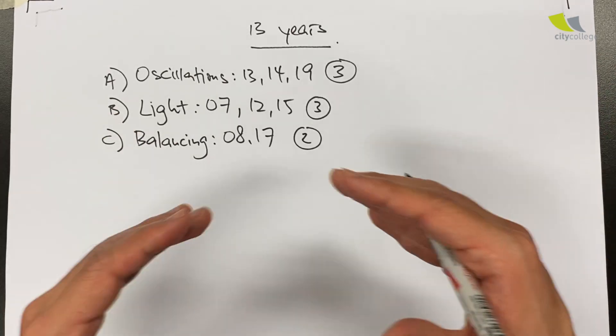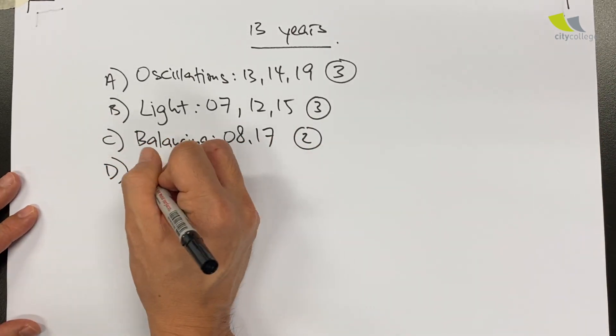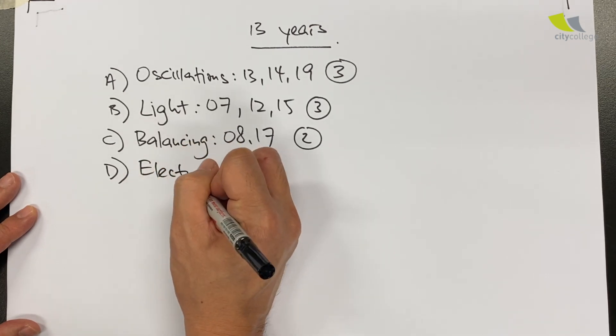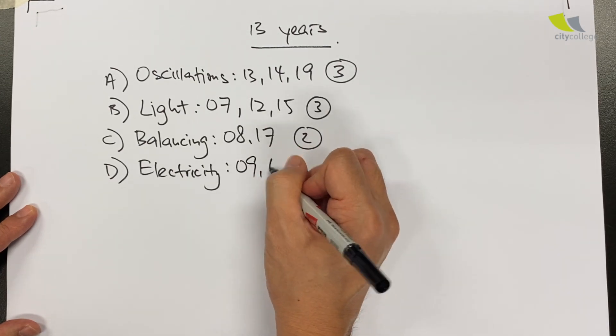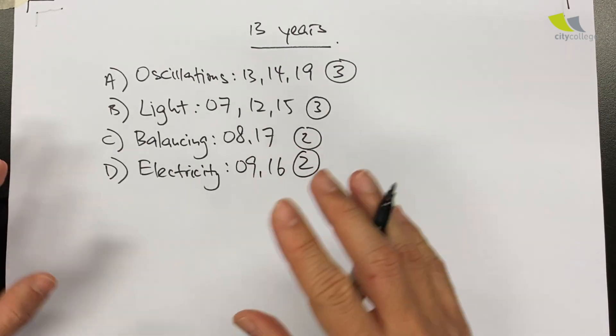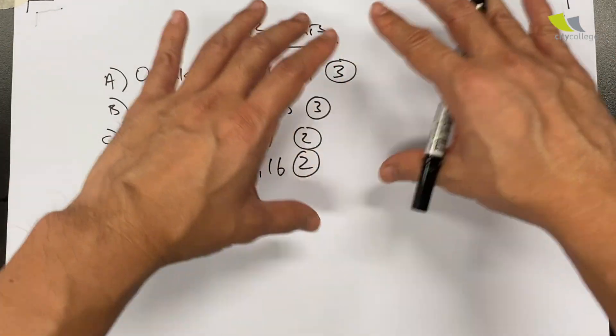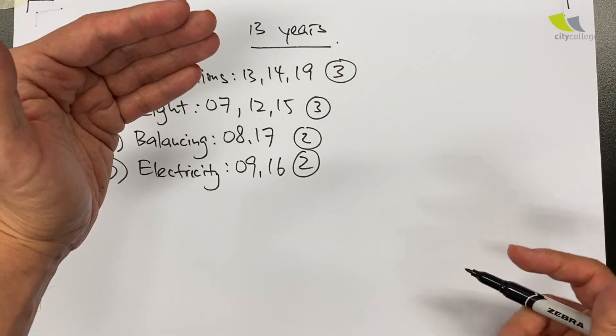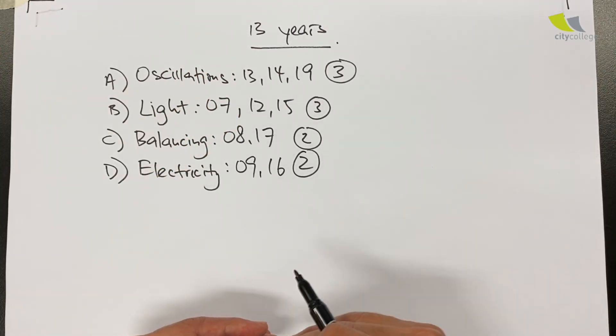Next group are your electricity questions. These came out in 2009 and 2016. Usually these questions require you to set up the circuit, and by observing the changes of the ammeter and the voltmeter, you eventually find some unknown resistance.